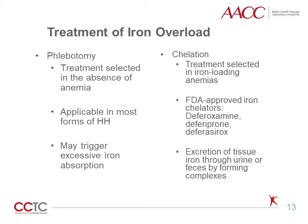And finally, I will briefly talk about two major therapies of iron overload: phlebotomy and iron chelation. In the absence of anemia, the treatment of choice is iron removal by therapeutic phlebotomy. It's applicable in most forms of hereditary hemochromatosis, and it's associated with reduced incidence of liver cirrhosis. However, phlebotomy might perpetuate the underlying low hepcidin state and therefore leads to excessive iron absorption.